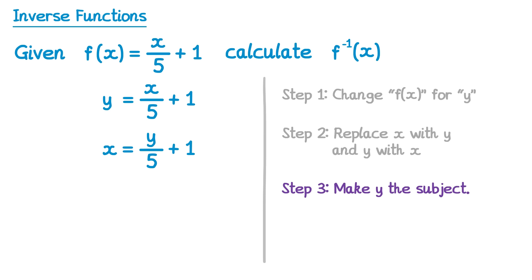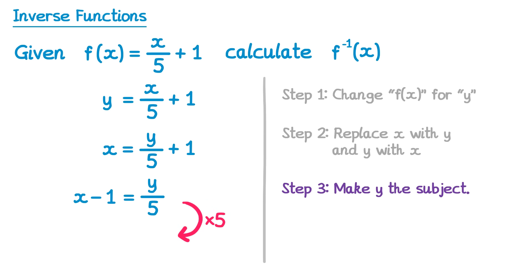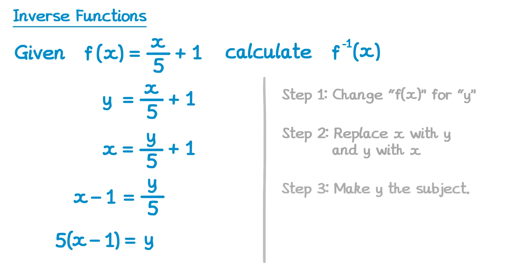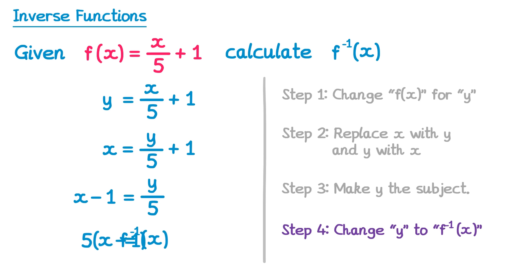Step 3: rearrange to make y the subject. Subtract 1 from both sides — on the right we get y/5, and on the left it's x − 1. Then multiply both sides by 5: on the right this cancels the 5 to give just y, and on the left we get 5(x − 1). Step 4: replace y with f⁻¹(x) and switch the order. If you wish, you could expand the bracket to get 5x − 5, but either form is acceptable as your answer.